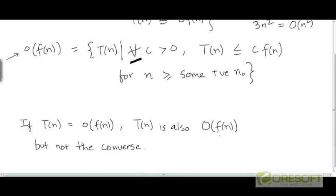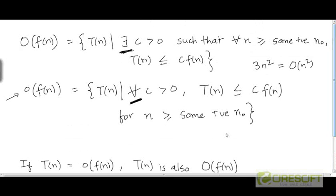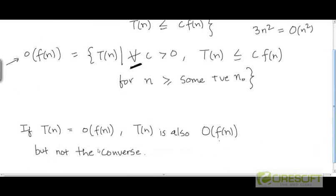The converse is not true, though. You could have a function in big-O that is not in little-o. That's because there could exist a constant c greater than 0 such that t is upper bounded by c times f, but this doesn't mean that for every constant c greater than 0, t is going to be upper bounded by c times f. For example, 3n² is only upper bounded by c times n² when c is greater than or equal to 3. So you could have a function that is in big-O but not in little-o, and the converse doesn't apply.